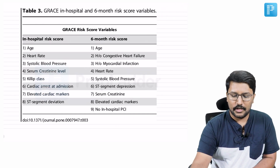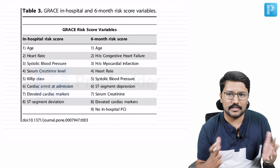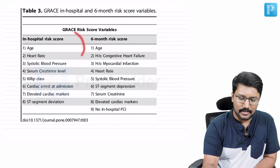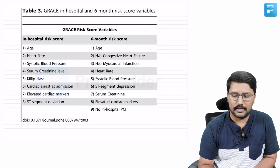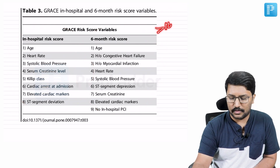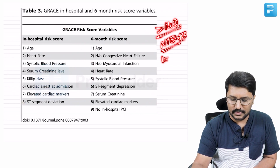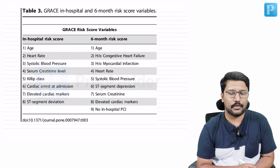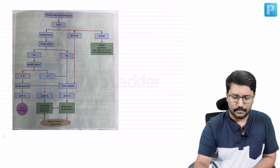Similarly, the GRACE score has two separate bands: one is the in-hospital score and the other is the six-month risk score. When the GRACE score is more than 140, in a case of non-ST elevation acute coronary syndrome, you think of invasive strategy.